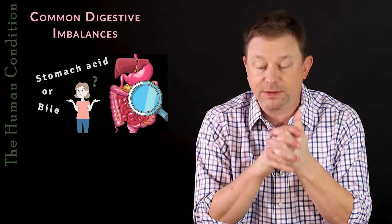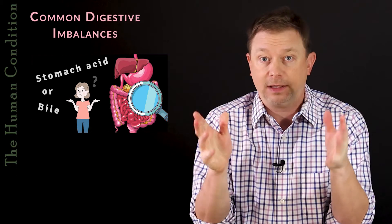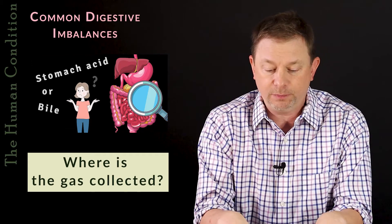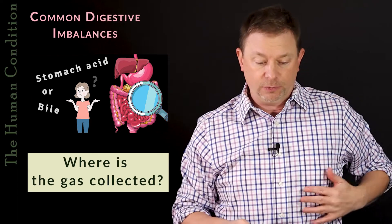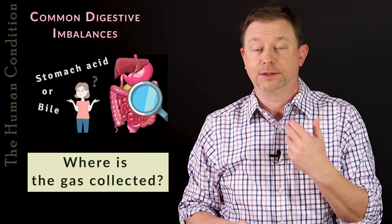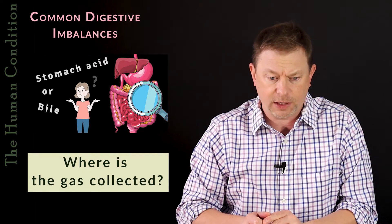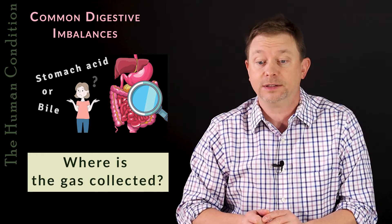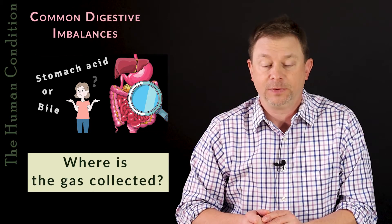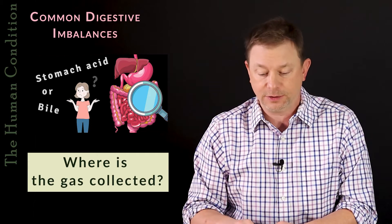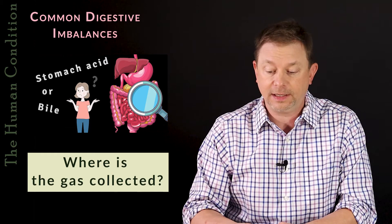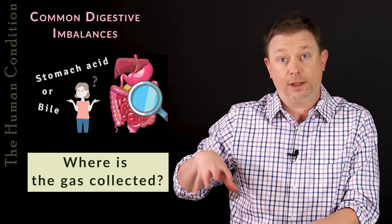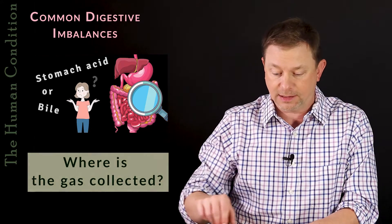We have to review some of these things. One key question is: where is the gas collected? If the problem is a stomach acid problem, they will usually collect gas in the stomach. If there is indigestion later in the small or large intestine, they'll produce gas there — much more likely the large intestine. Although it can also happen in the small intestine in something called SIBO, which we'll get to. That gas will end up being flatulence coming out of the backside.